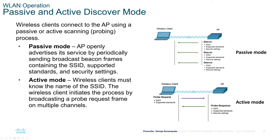In active mode, the SSID is not broadcasted by the access point. The wireless client must know the SSID and initiates the process by broadcasting a probe request frame on multiple channels. If the client knows the wireless network exists, it can enter the SSID manually and connect because the client is aware of the SSID.